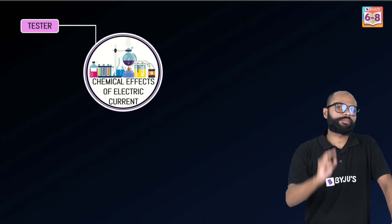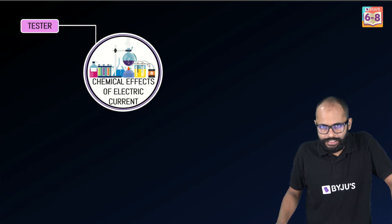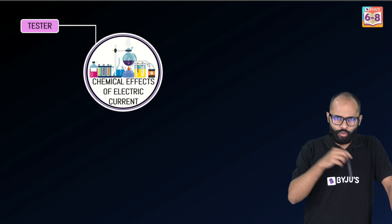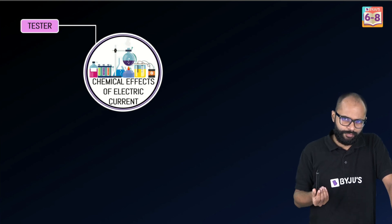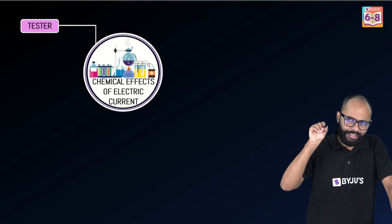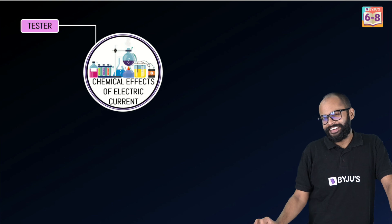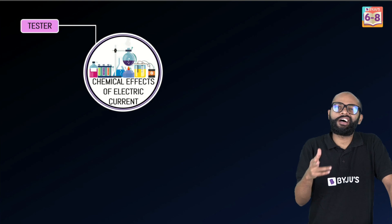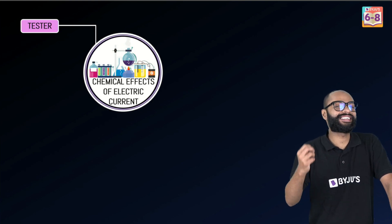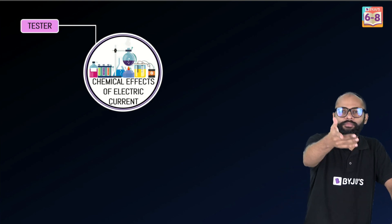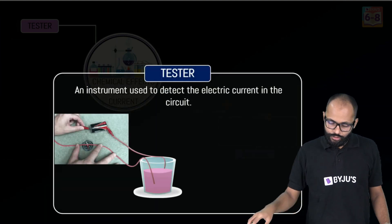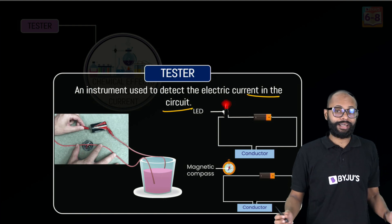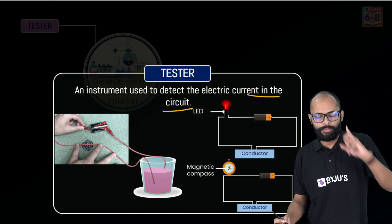The first small but very important concept in this chapter is the tester. A lot of us remember a tester as that screwdriver-kind of thing which an electrician keeps with them — they use it to check whether current is there or not. Psychologically and functionally, the tester is the same idea. Tester is an instrument used to detect electric current in a circuit — is there current or not? The tester will tell you.